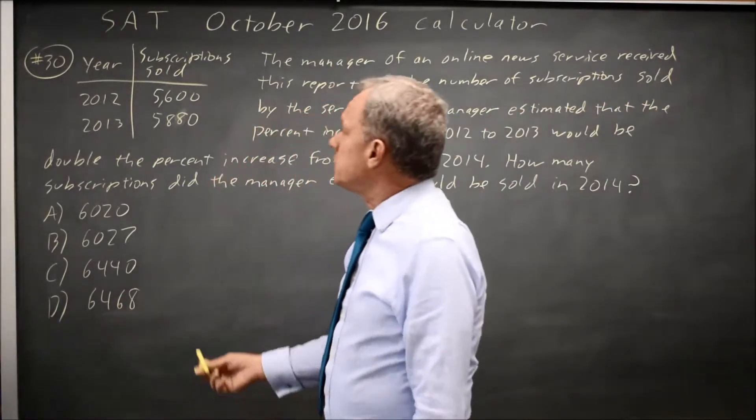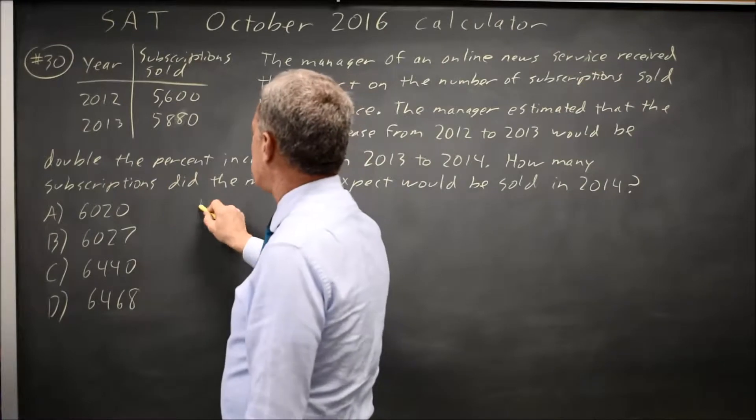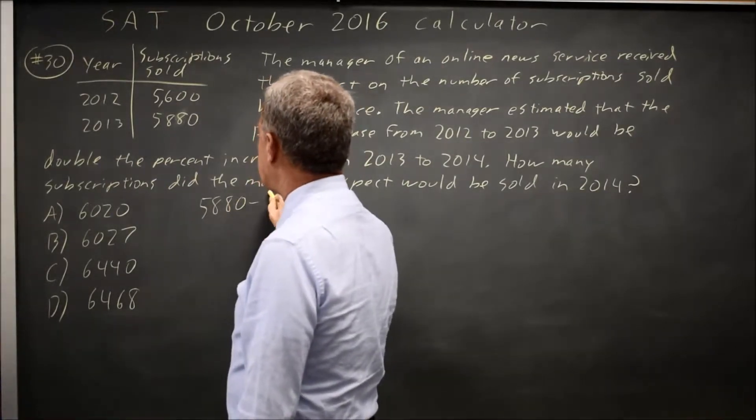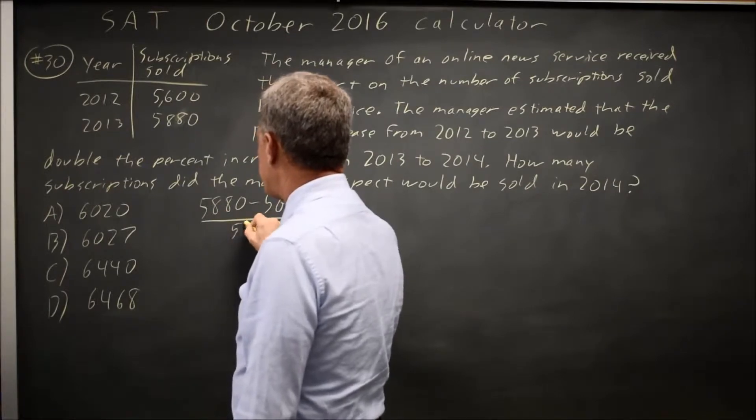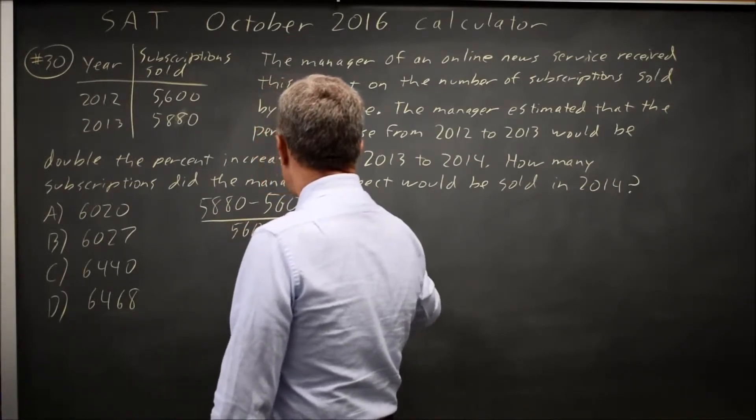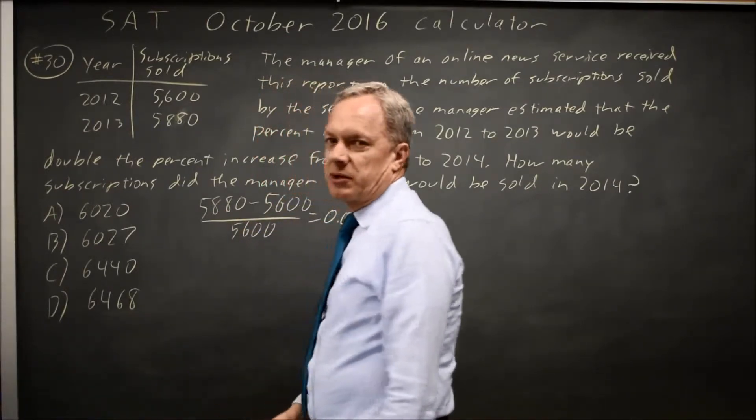The increase is the change here, 5880 minus 5600 over the original amount 5600, which is 5% according to my calculator.